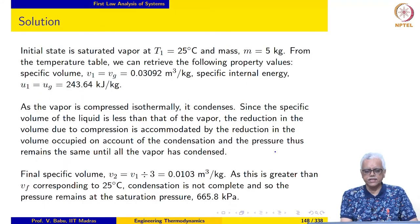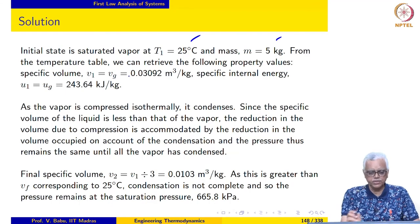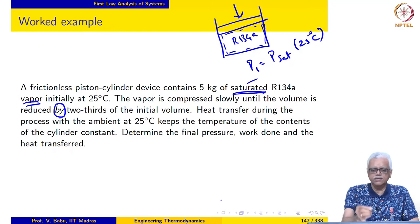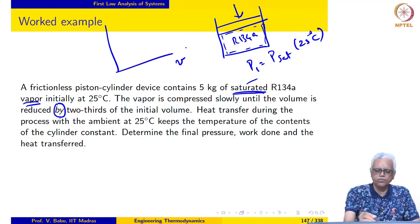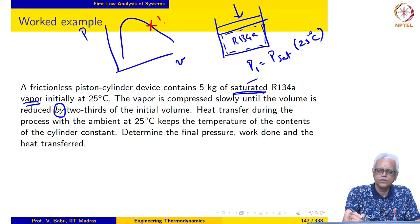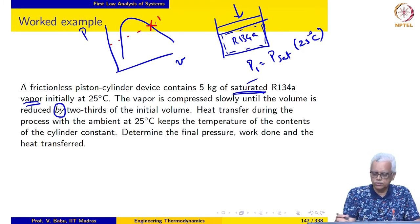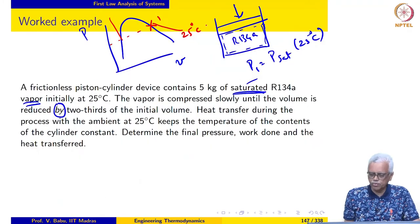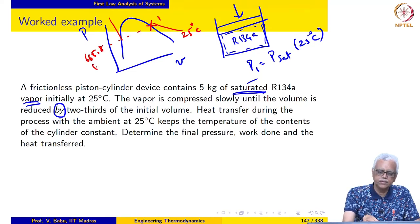The initial state is saturated vapour at 25 degrees Celsius and mass is also given. From the temperature table, we can retrieve the required values: the pressure is equal to 665.8 kilopascal. If we look at the process on a PV diagram, the initial state is at this pressure and we draw the isotherm at 25 degrees Celsius. The initial pressure we retrieve to be 665.8 kilopascal.